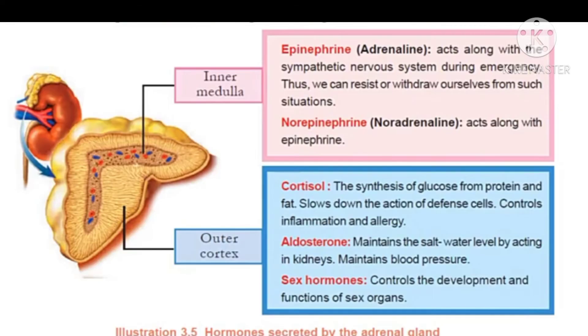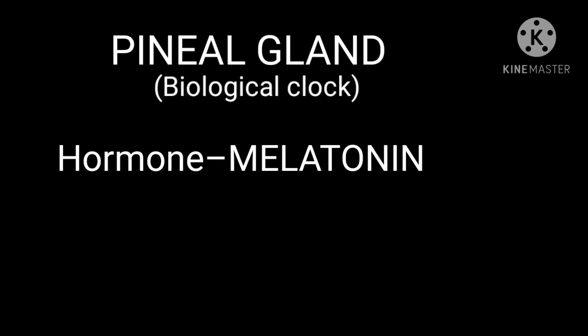Today we learned about the adrenal gland. It is situated in the upper part of the kidney and has an inner medulla and outer cortex. The outer cortex secretes cortisol, aldosterone, and sex hormones. The inner medulla secretes epinephrine and norepinephrine. The pineal gland is also known as the biological clock, and it secretes the hormone melatonin.